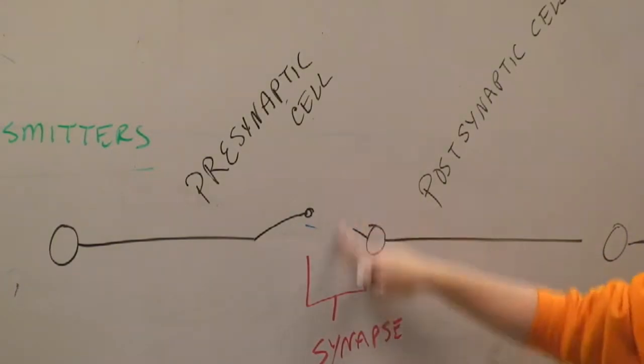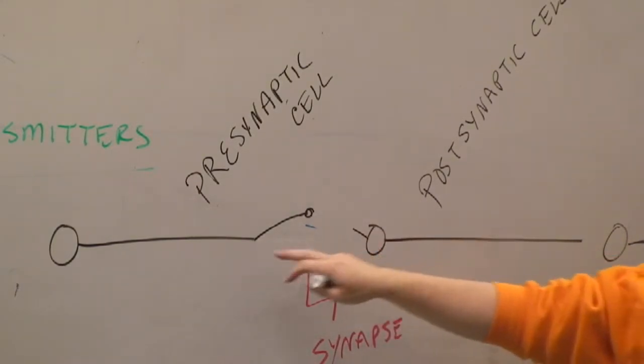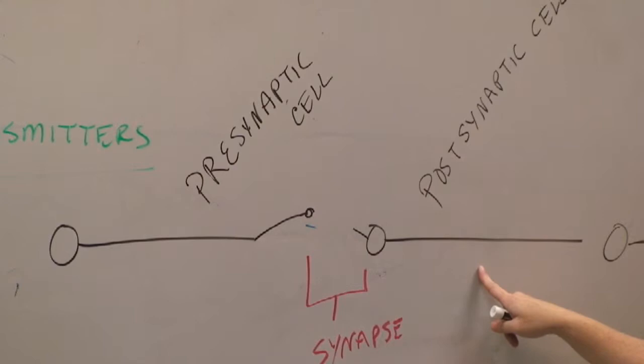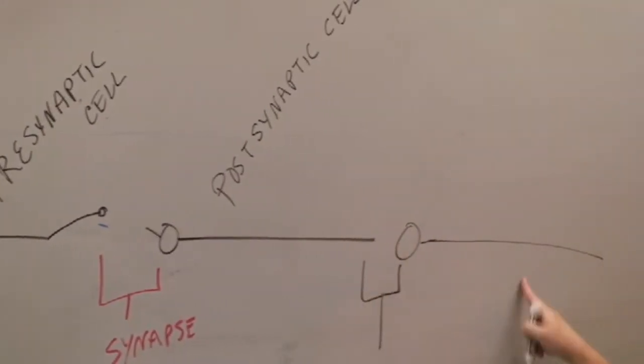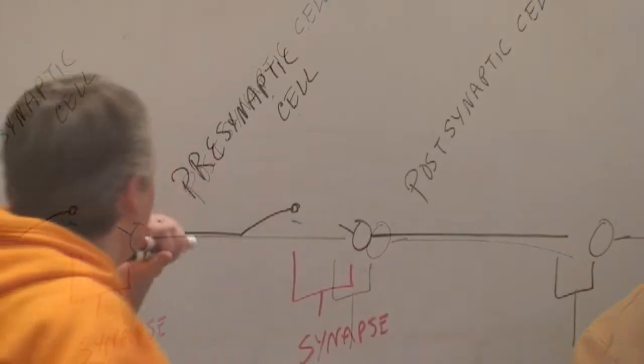So for this synapse, for this site of communication, that's the pre, that's the post. But then this cell can turn around and send the signal to another cell. And for the second synapse, this would be the presynaptic cell. And that would be the postsynaptic cell. Now, here's the thing.